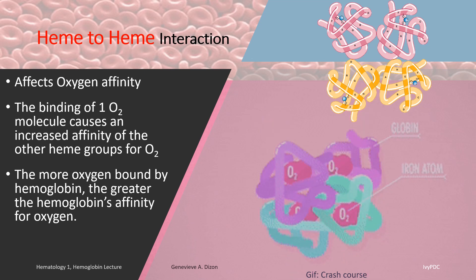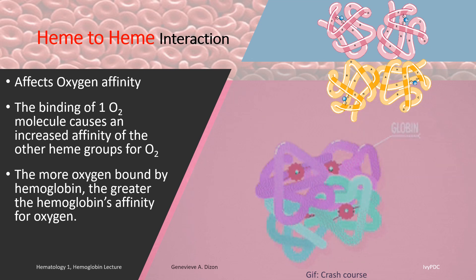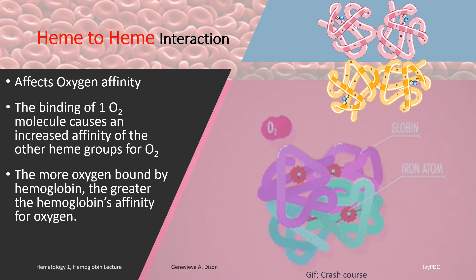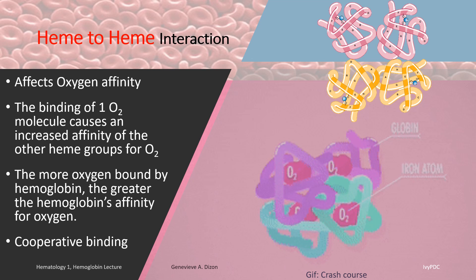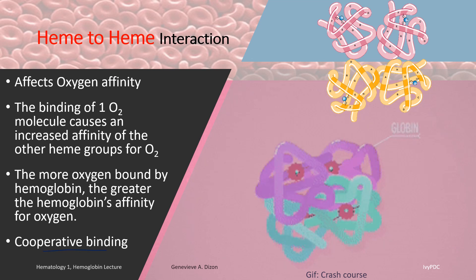The heme-to-heme interaction describes the cooperation among the hemoglobin subunits. That's why this is also called cooperative binding.